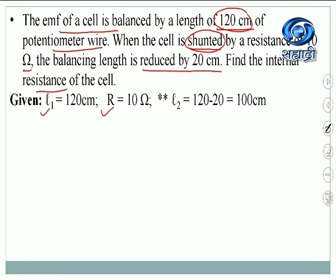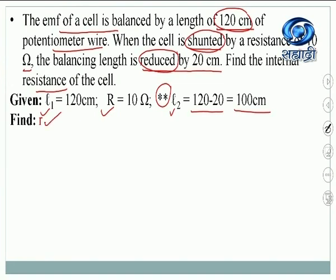The balancing length is reduced, meaning it is decreased by 20 centimeter. Therefore L2 is 120 minus 20, that is 100 centimeter. This is the important part of this numerical — understanding that 'reduced by 20' means L2 equals 100 cm. With this we have to find out the internal resistance of the cell.